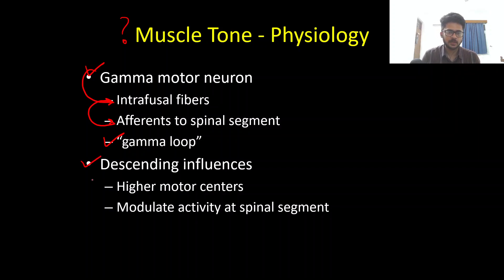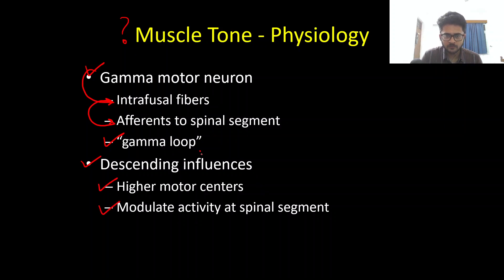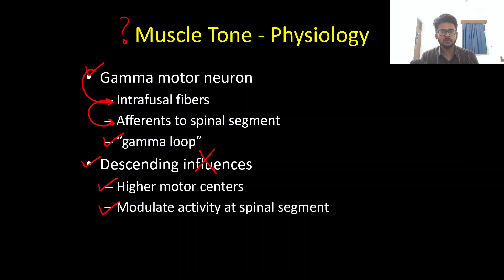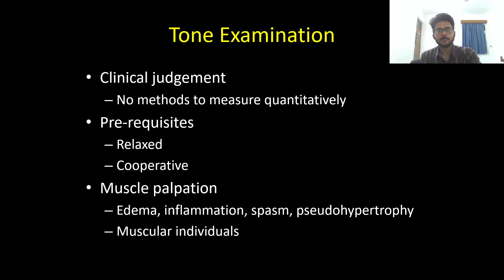The gamma loop is not the only thing that maintains tone. We also have descending influences from higher motor centers which modulate activity at the spinal segment. This is why when we have loss of descending influences — for example, in a pyramidal or corticospinal tract lesion — there is going to be an increased muscle tone, due to loss of the inhibitory influence of the higher motor centers.